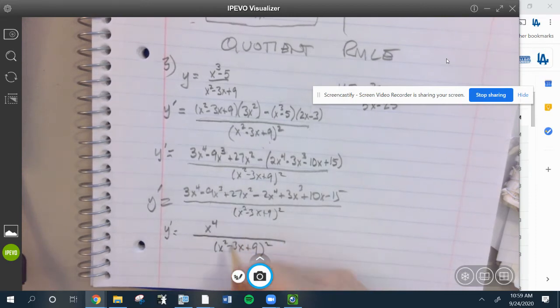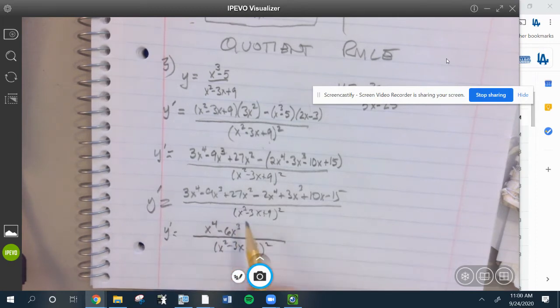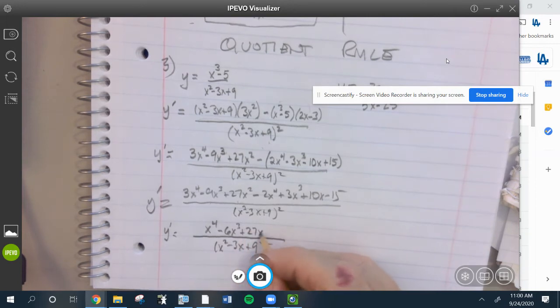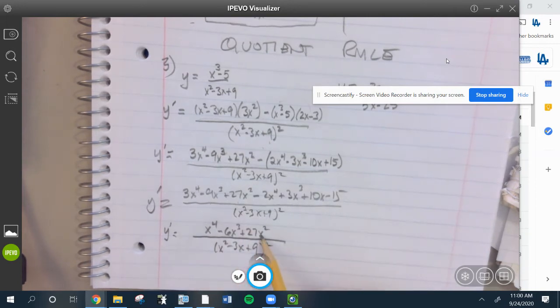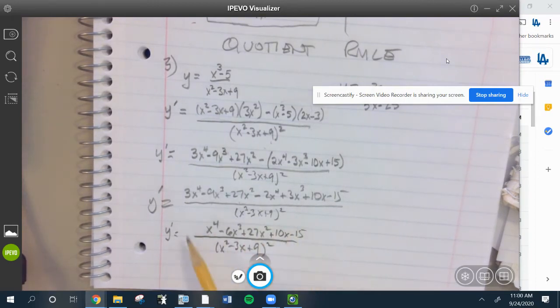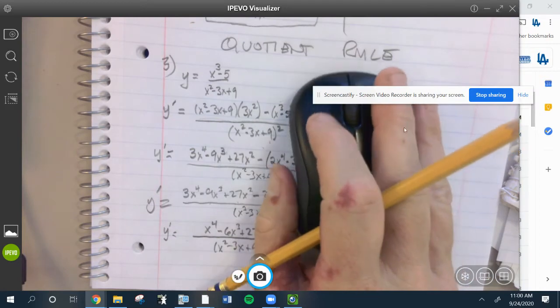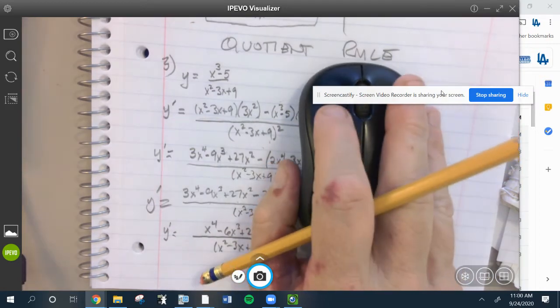27x squared is by itself, there's nothing to combine with it, plus 10x minus 15. I don't know if this is factorable, it's not worth checking, so this is going to be my final answer. I'm going to check that on Wolfram Alpha most definitely after this video, so if it's wrong I'll let you know.